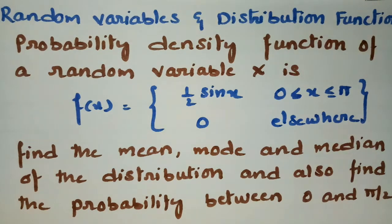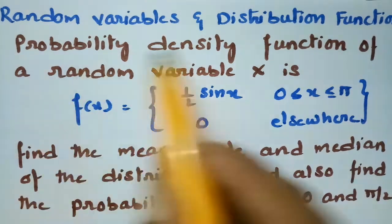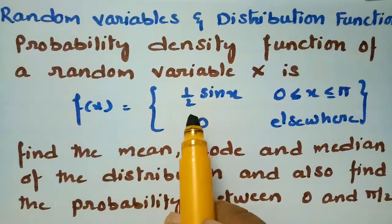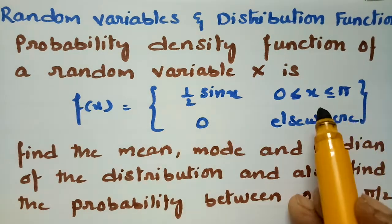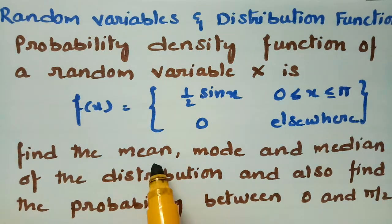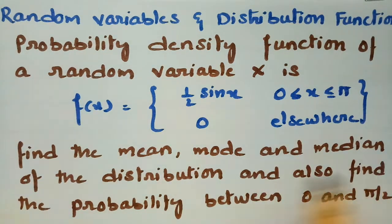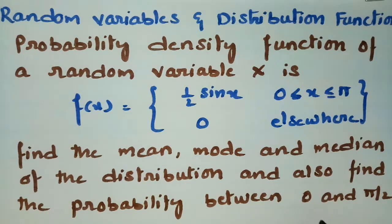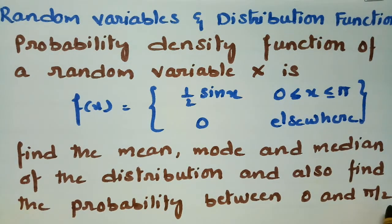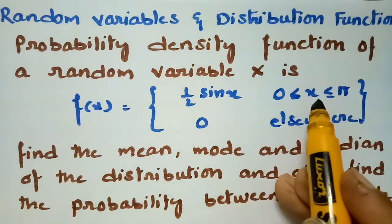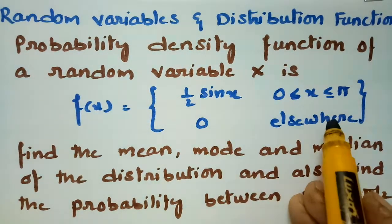Today's video I am going to discuss a problem from random variables and distribution functions. The probability density function of a random variable x is f(x) = (1/2)sin(x), where x lies between 0 to π, and 0 elsewhere.